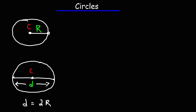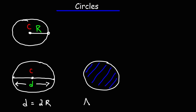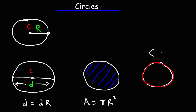The next thing you need to be familiar with is the area and the circumference of a circle. The area is basically the area of the shaded region. To calculate the area of a circle, you use the formula pi times R squared. The circumference is the distance around the edge of the circle, and to calculate it, it's equal to 2 pi times R.